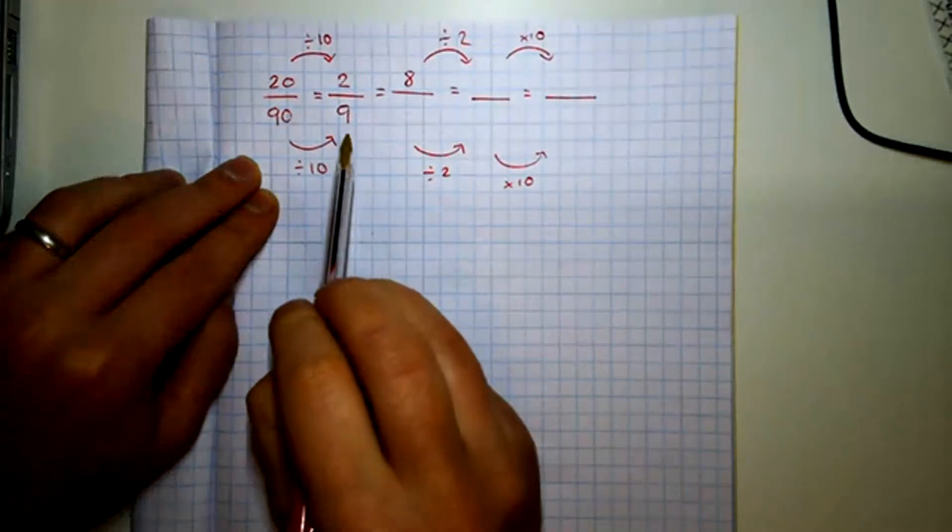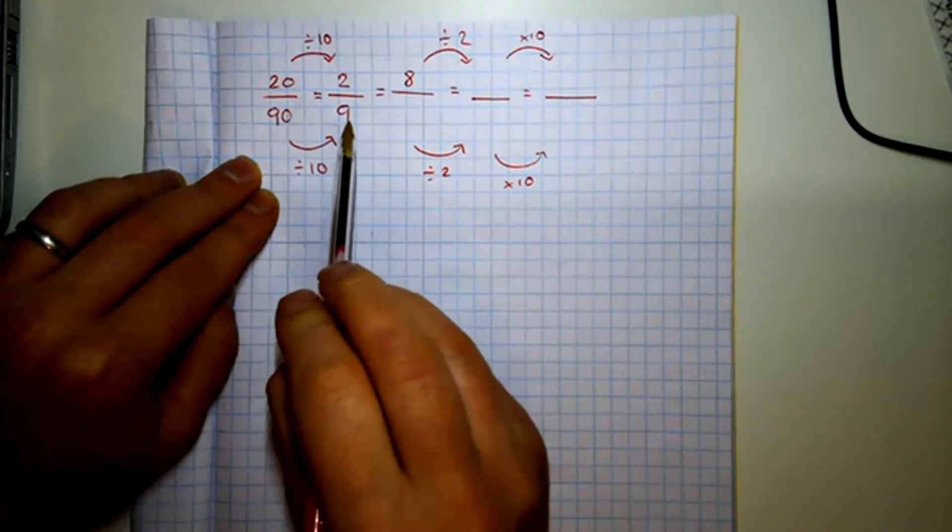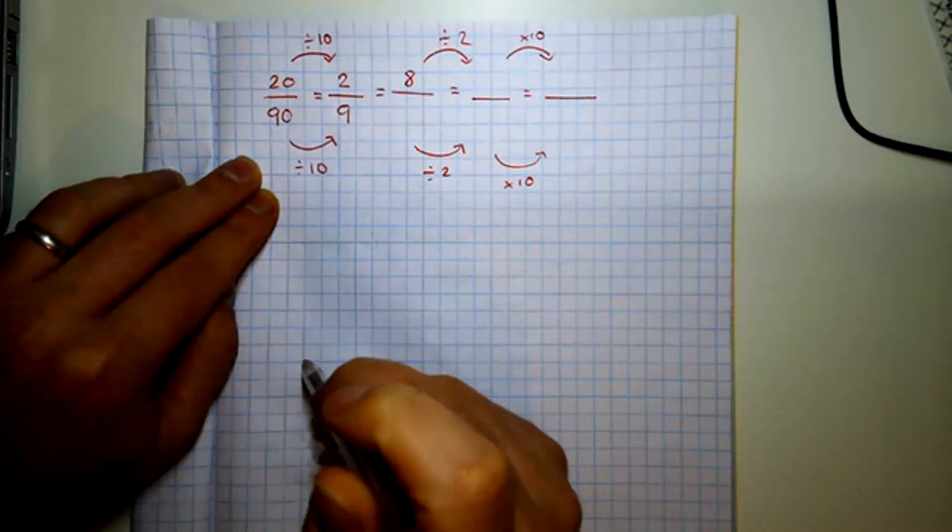And if you do the same to the top you get 2. So this is equivalent to having a whole one split into nine pieces and two of them shaded in.